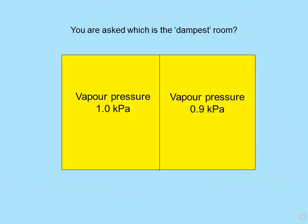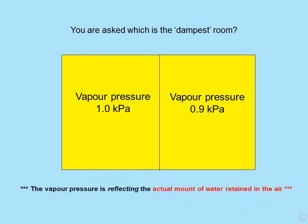So then you're asked: which is the dampest room? Vapour pressure on the left is one kilopascal; vapour pressure on the right is 0.9 kilopascals. It's the one on the left — it's got more water vapour present in the atmosphere than the one on the right. The vapour pressure is simply reflecting the actual amount of water retained in the air.